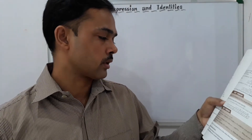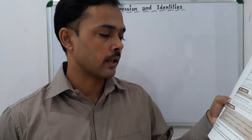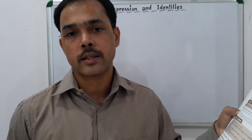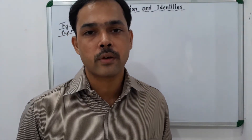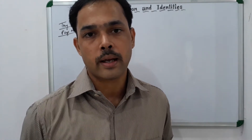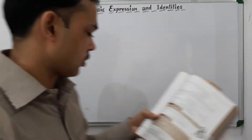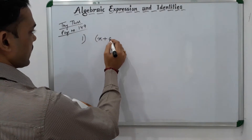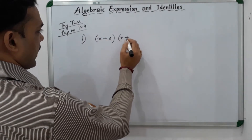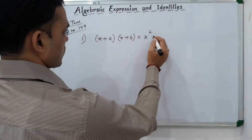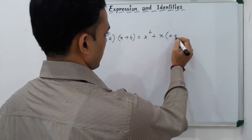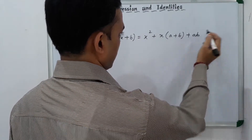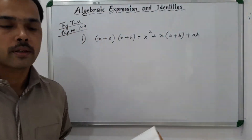In question number 1, we have to verify identity 4 for A equals 2, B equals 3, and X equals 5. I have already mentioned about identity 4 through an activity. Identity 4 is: (x + a)(x + b) = x² + (a + b)x + ab. This is the fourth identity.